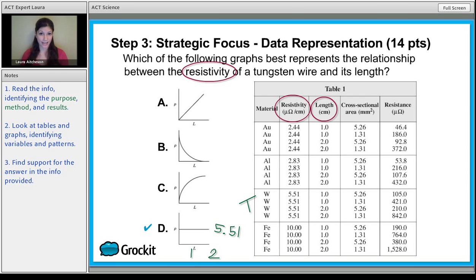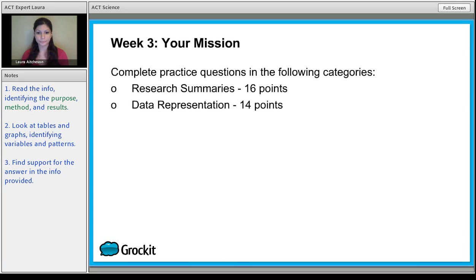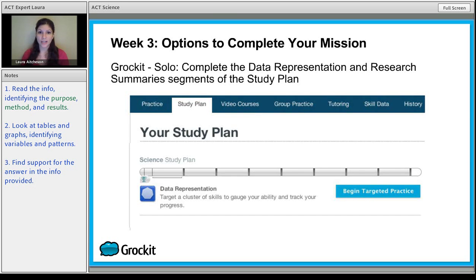We went over data representation and research summaries so you can practice on your own. 16 points for research summaries, 14 points for data representation - you better believe you want those points. You can actually just use your study plan tab. These three are all data representation, these three are all research summaries. The last two, because there aren't as many on the test, are conflicting viewpoints passages. So if you just complete all of the data representation and research summary segments, you're done for this week. You can just use your study plan tab. It's very easy.